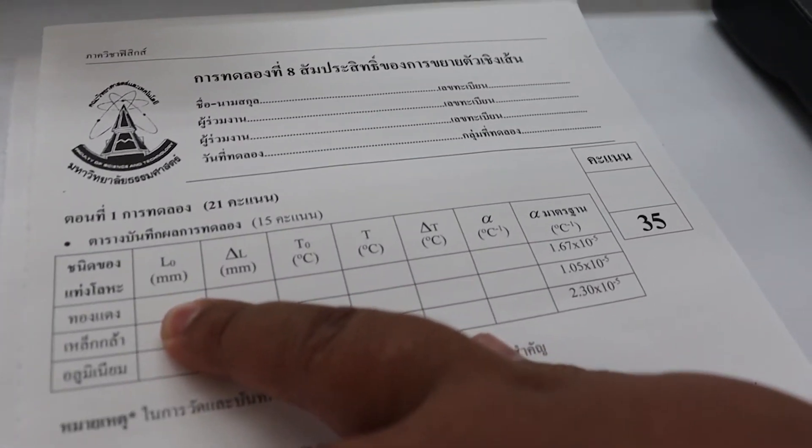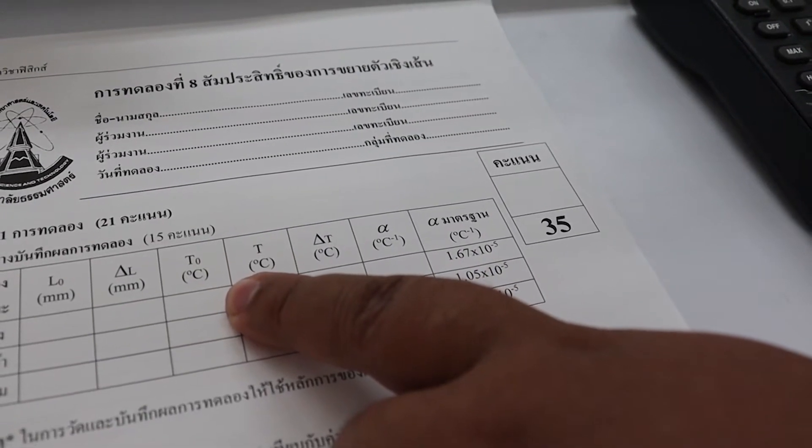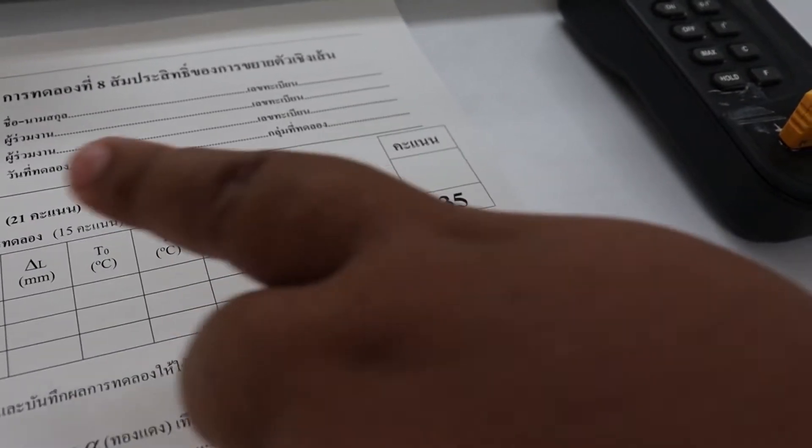Looking at the report, record L0 in the unit of millimeters. Delta L is going to be measured in the next step. T0 is recorded here.